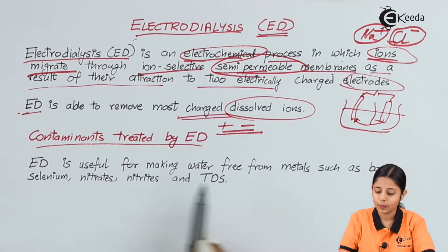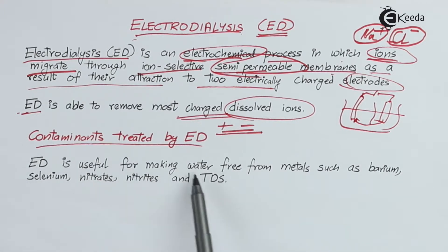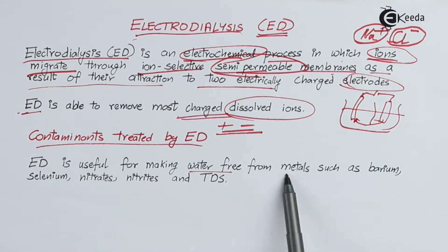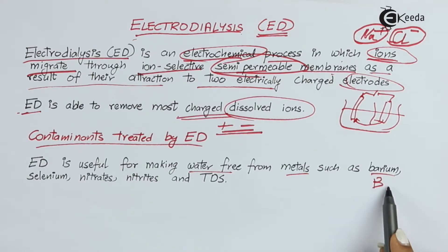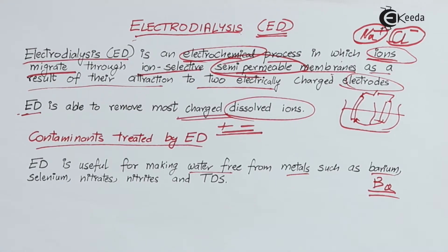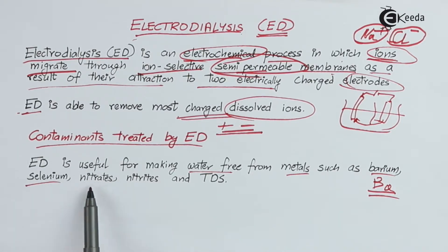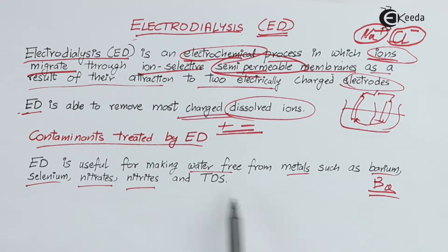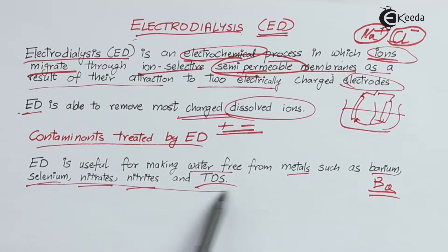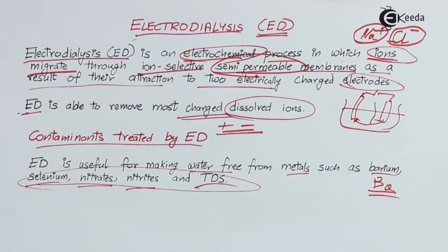Contaminants treated by ED: electrodialysis is useful for making water free from metals such as barium (symbol Ba), which can be dissolved in water either as an element or in the form of a certain ion. Other contaminants include selenium, nitrates, nitrites, and TDS. All of these, when present in water in extremely small quantity and dissolved form, can be removed using electrodialysis.